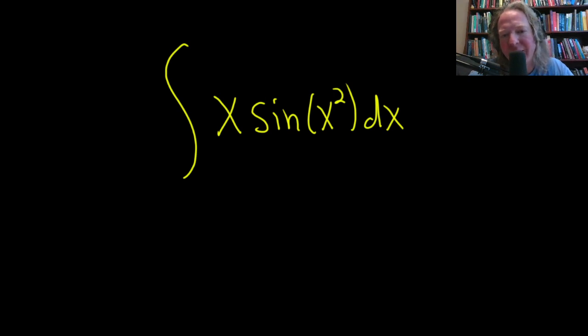In this example we have to integrate x times the sine of x squared. We'll start by making a u substitution. We're going to let u be the inside function. So in this case our inside function is going to be this piece here. We'll let u be equal to x squared.